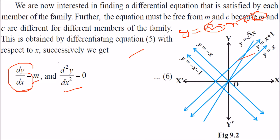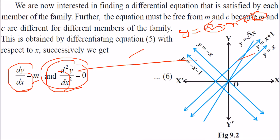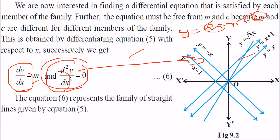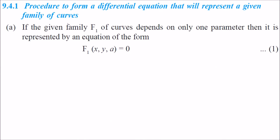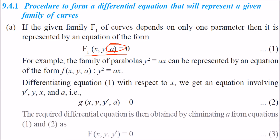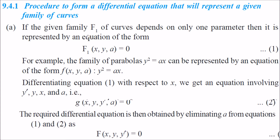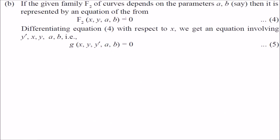dy by dx gives m, and differentiating again gives d²y by dx² equal to 0. This is the equation of those families of lines represented by y equal to mx plus c. The procedure to form a differential equation representing a given family of curves: if you have one constant, differentiate it once; if you have two constants, differentiate it twice.